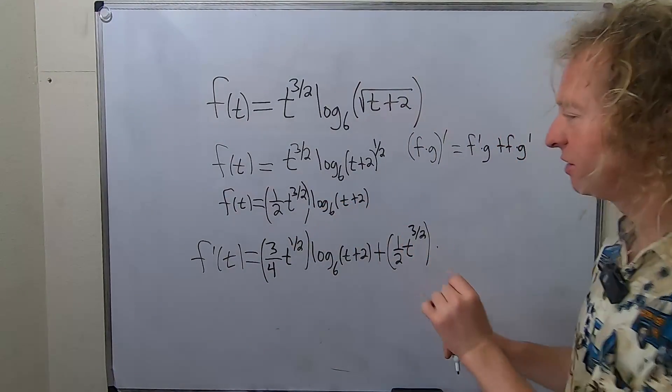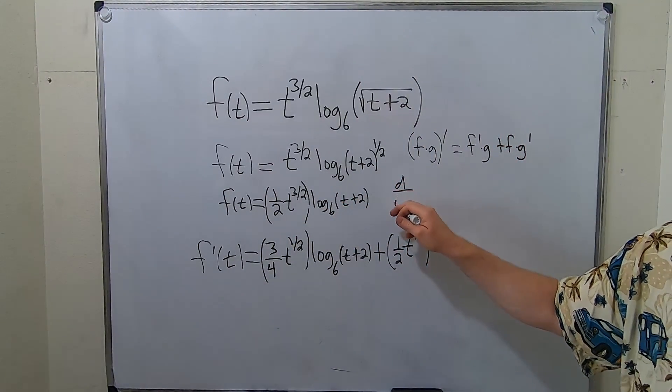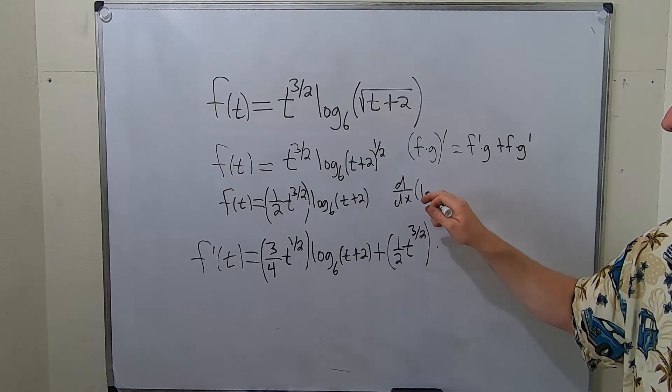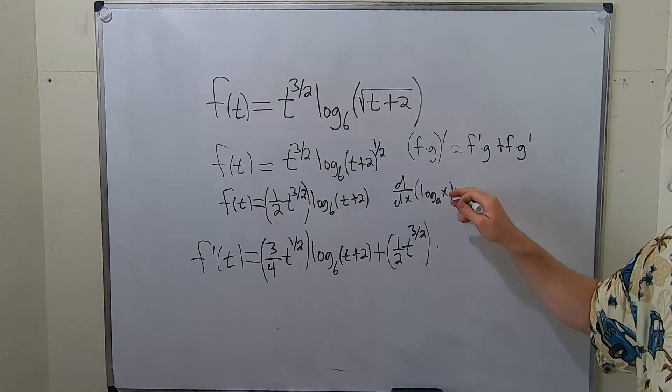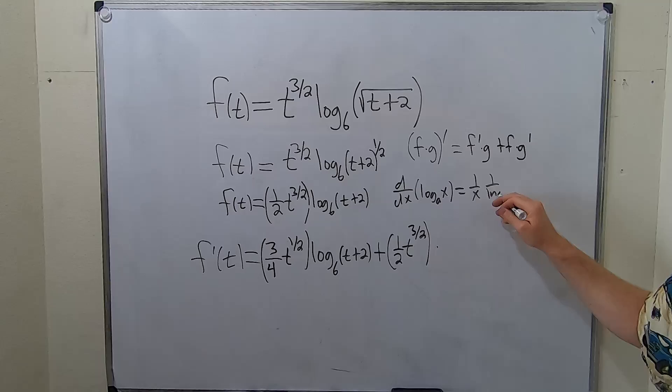I'll put this in parentheses times the derivative of the second. So the derivative of this, let me refresh your memory. If you have the derivative of log base a of x, it's 1 over x, 1 over ln a. That's the formula.